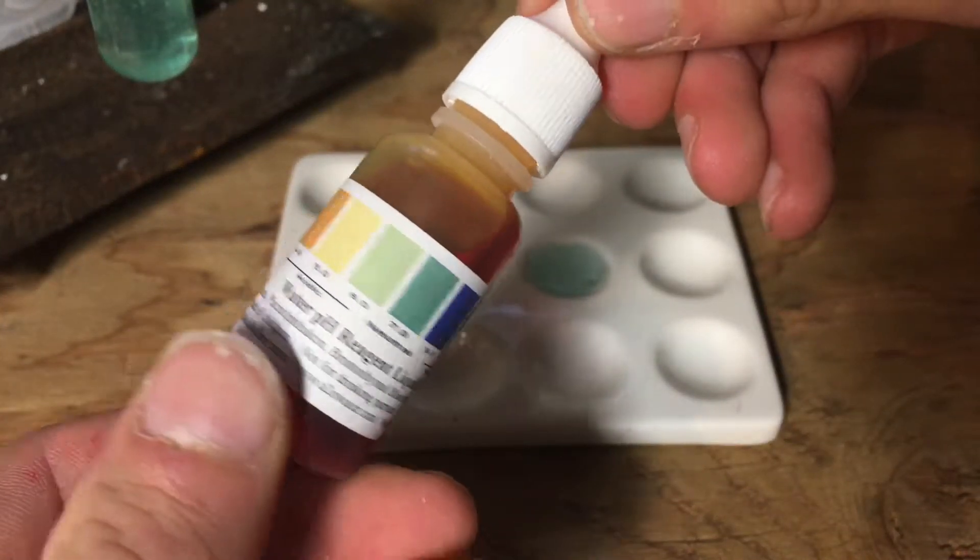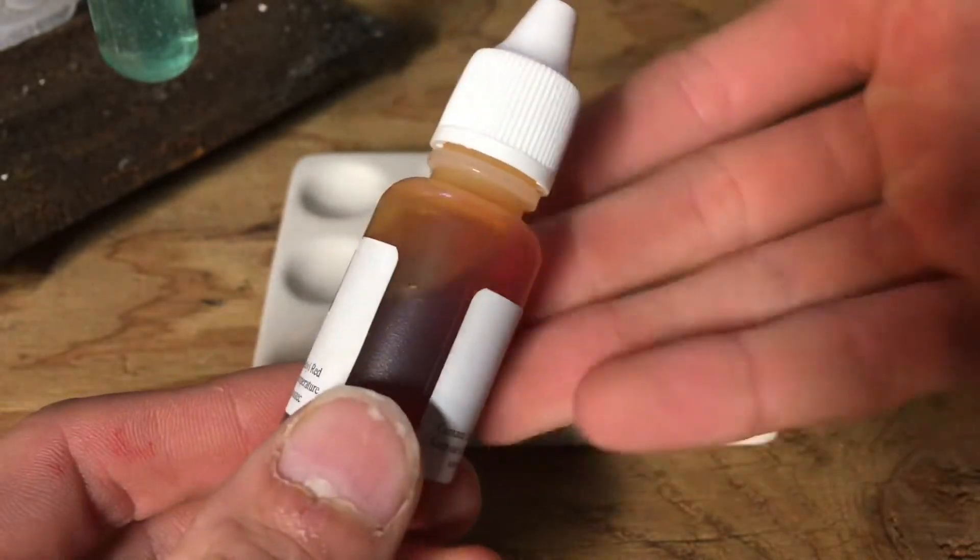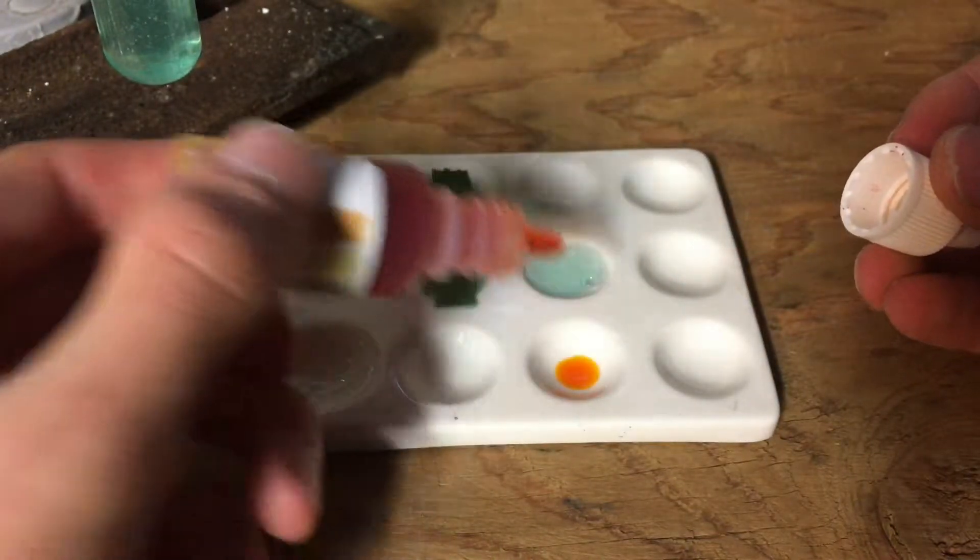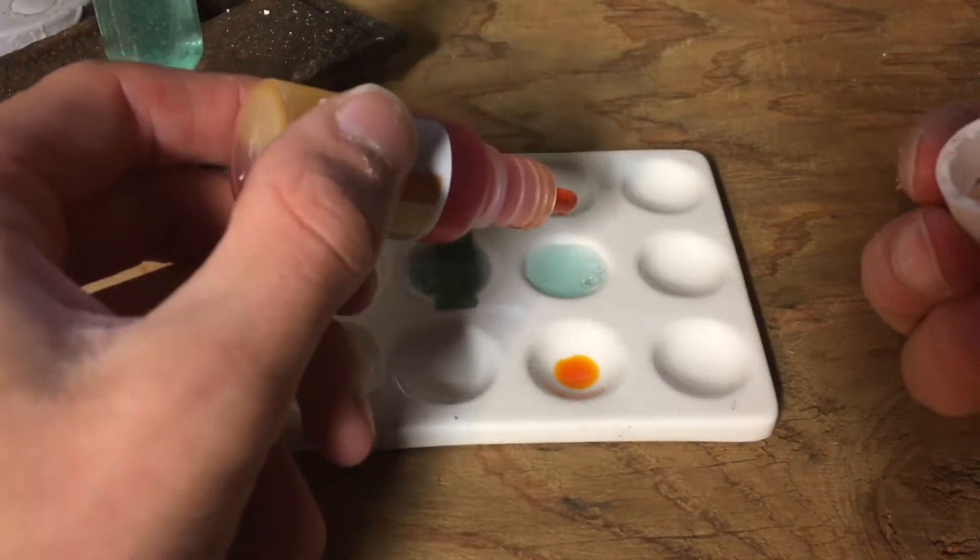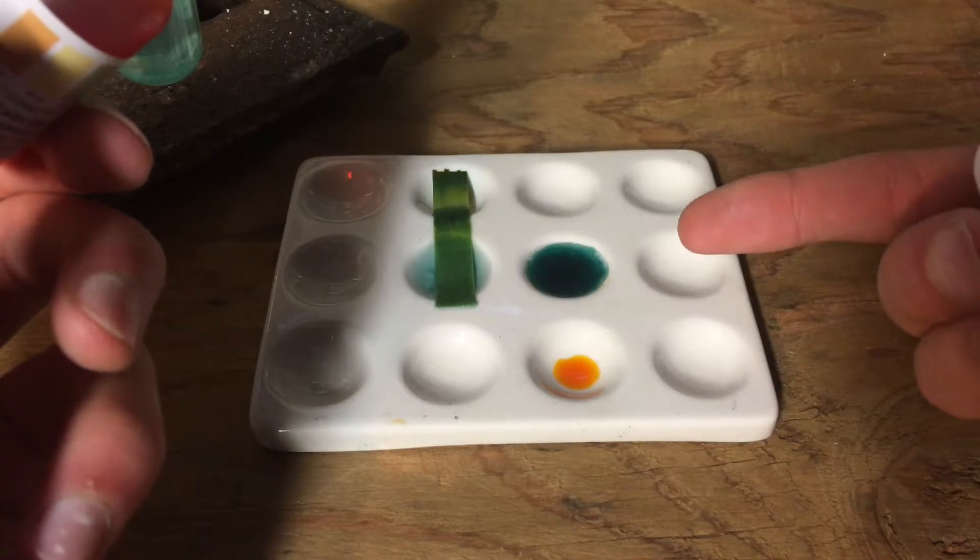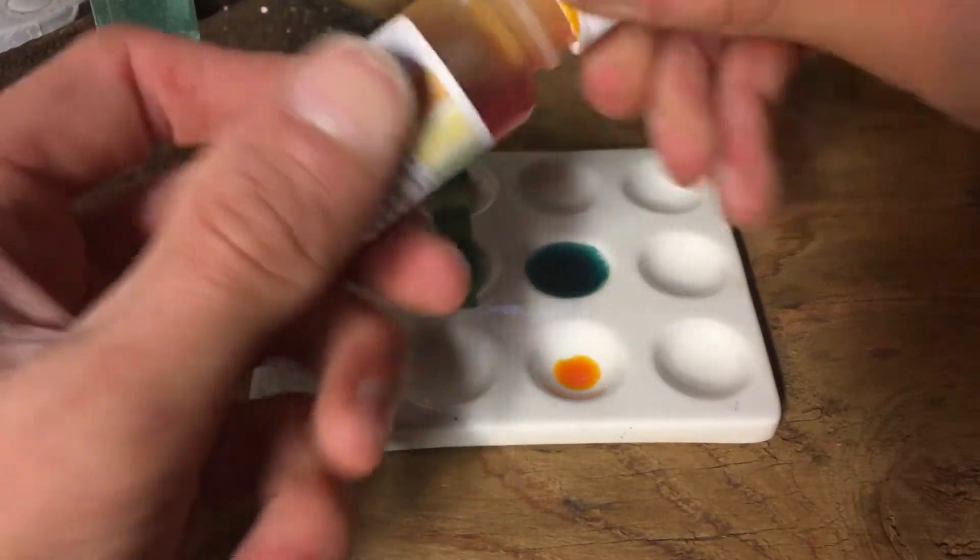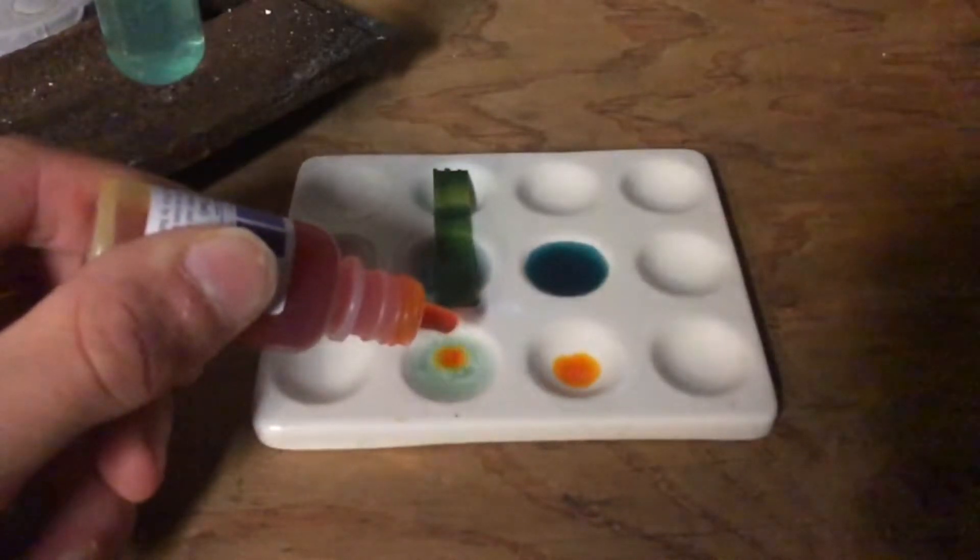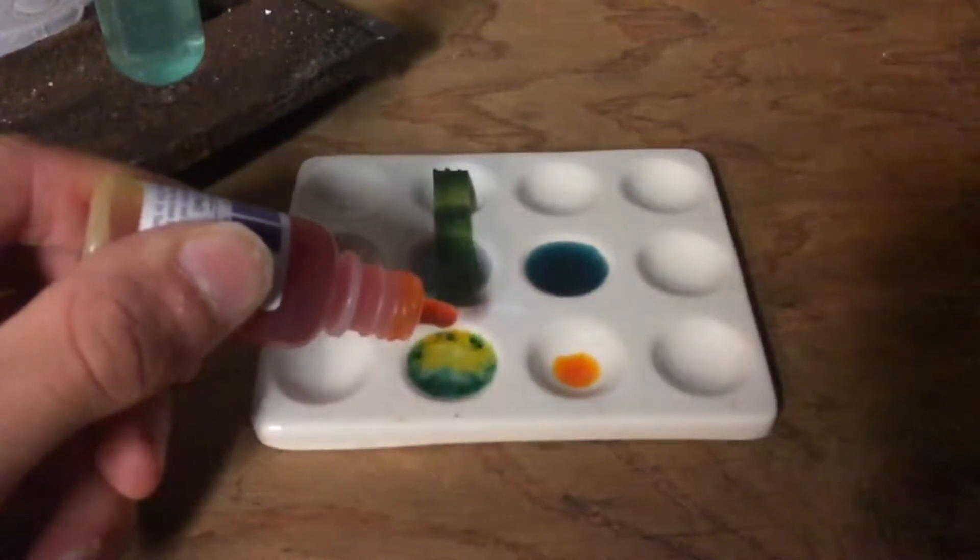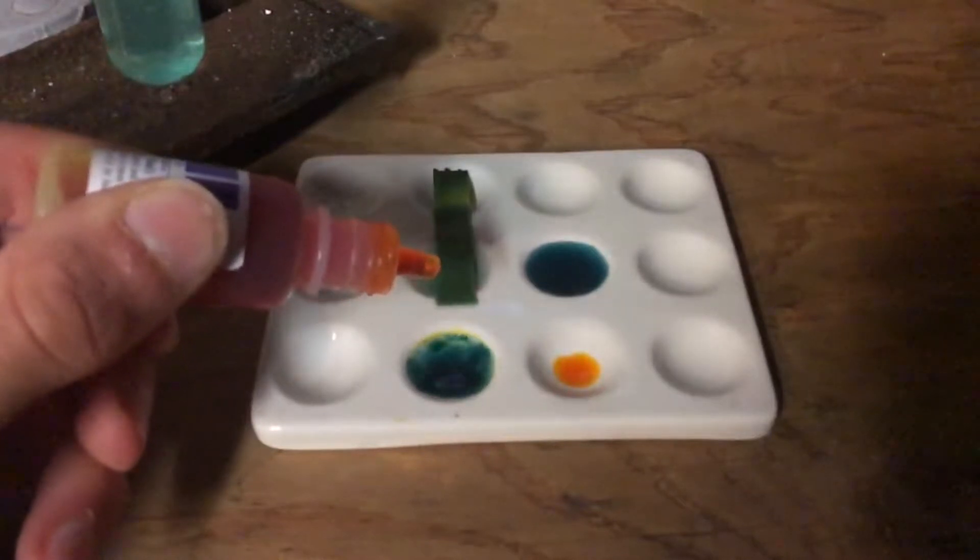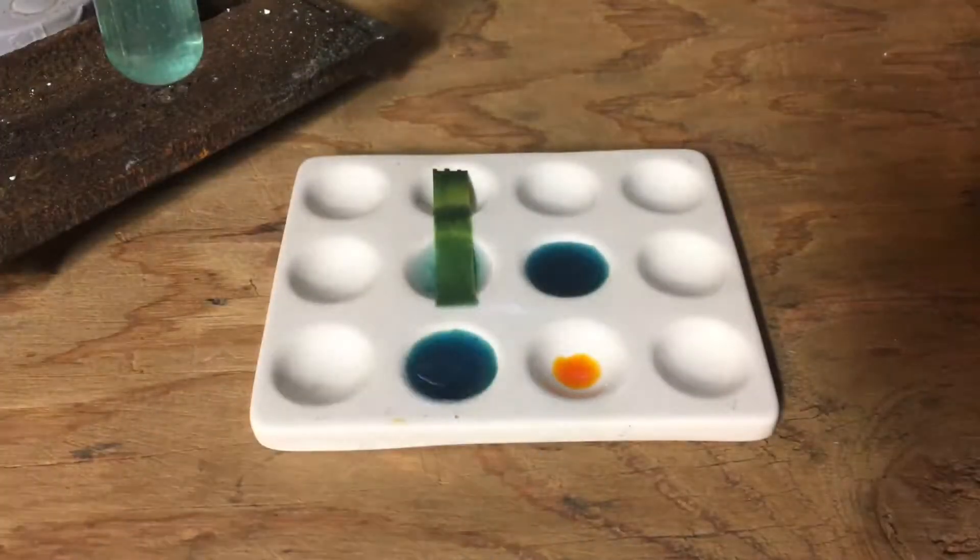And the reagent color is kind of orangish, reddish color. It's a nice color. Oh, that was cool. That was a very cool thing. Actually, let's see that in slow motion. That was a very cool slow motion.